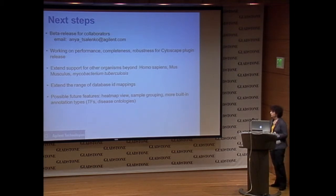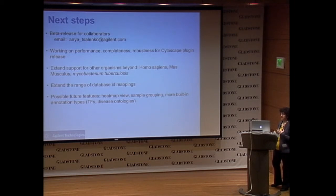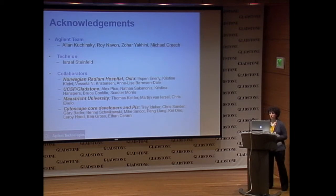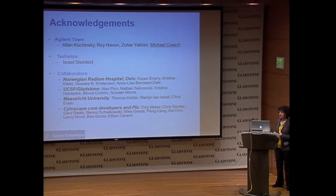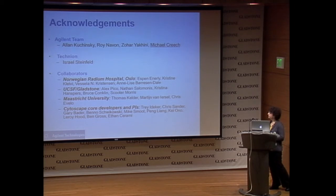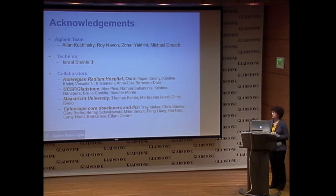Other features we're interested in adding include a heat map view for primary and pivot data, grouping of samples — because many datasets have case-control designs — and support for more built-in annotation types. Projects like this are the work of many people. On the Agilent side, Alan Kuczynski was responsible for the design of the plugin, Mike Creech for the actual implementation, Roy Navon and Zohar Yakhini worked on the enrichment analysis methodology, as well as Israel Steinfeld at the Technion. We thank all our collaborators in Oslo and UCSF, and the Cytoscape core development team.